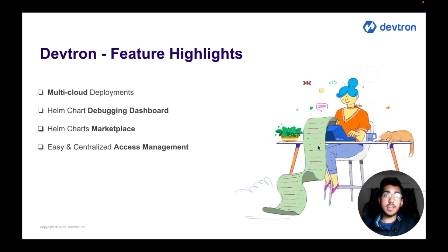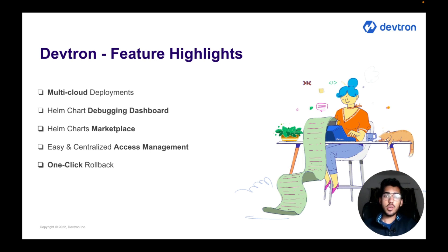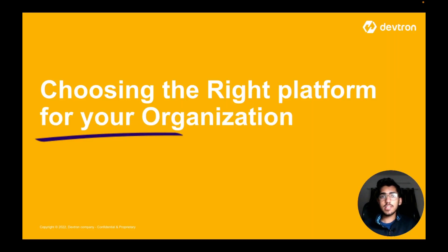The dashboard also provides a Helm chart marketplace by default where you can search for pre-built charts and customize them according to your needs. It also provides easy and centralized access management for cross-team collaboration within your organization. Notably, Devtron provides very fine-grained access management even at the Helm chart level. You can seamlessly configure applications using configuration files, and it is really easy to roll back to a previous configuration change whenever necessary. The dashboard is self-hosted and accessible via the web.